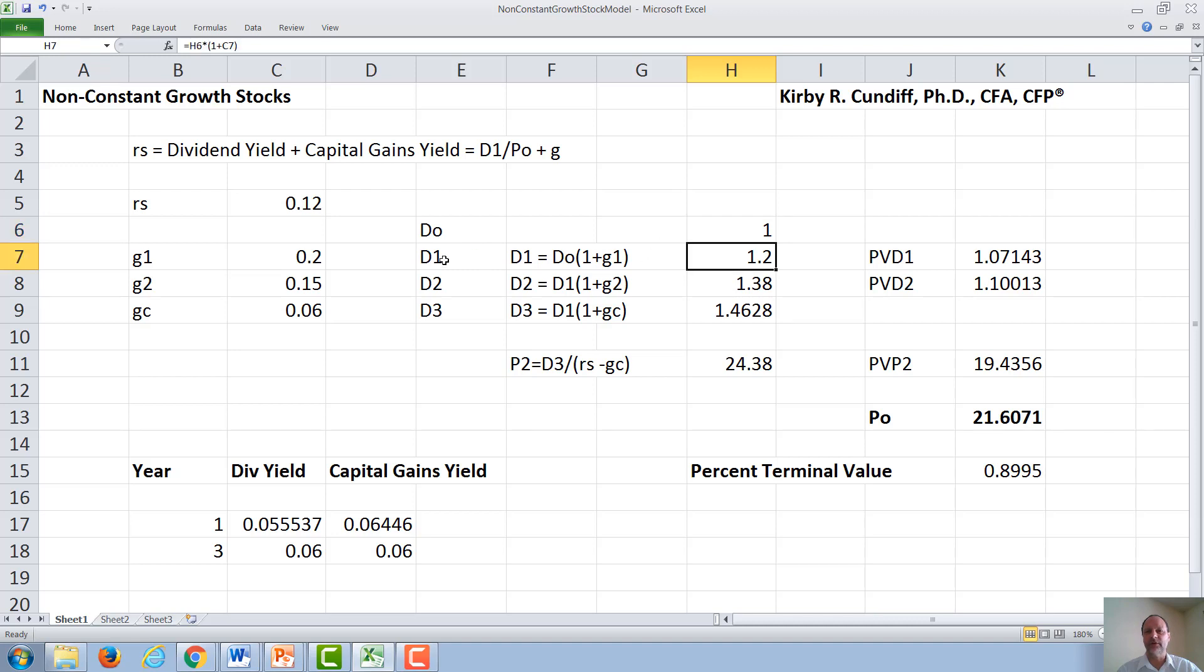we will first need to know the dividend D1 a year from then. That dividend will be D0 of $1 times 1 plus the first high growth rate of 0.2, or 1.2.